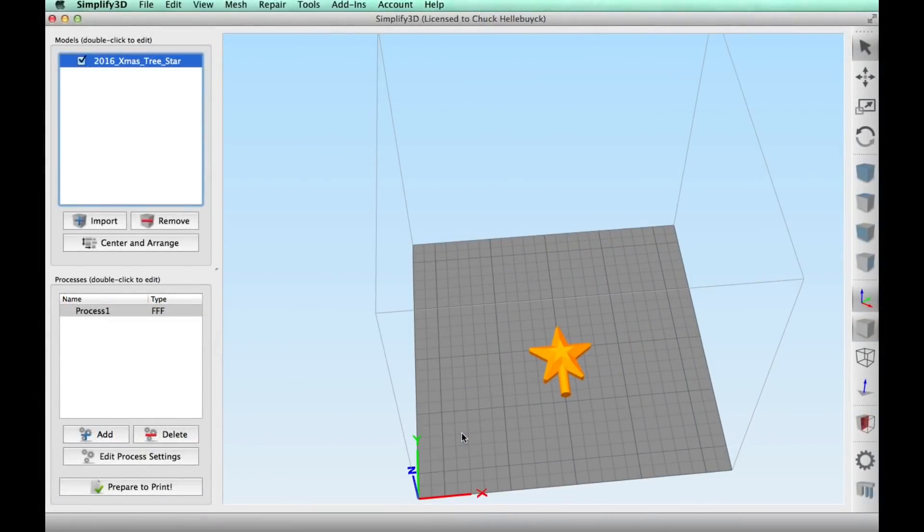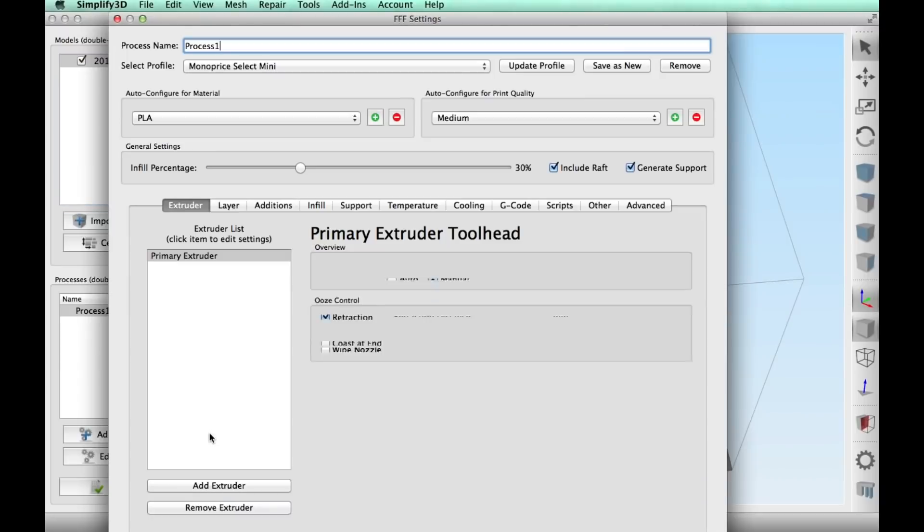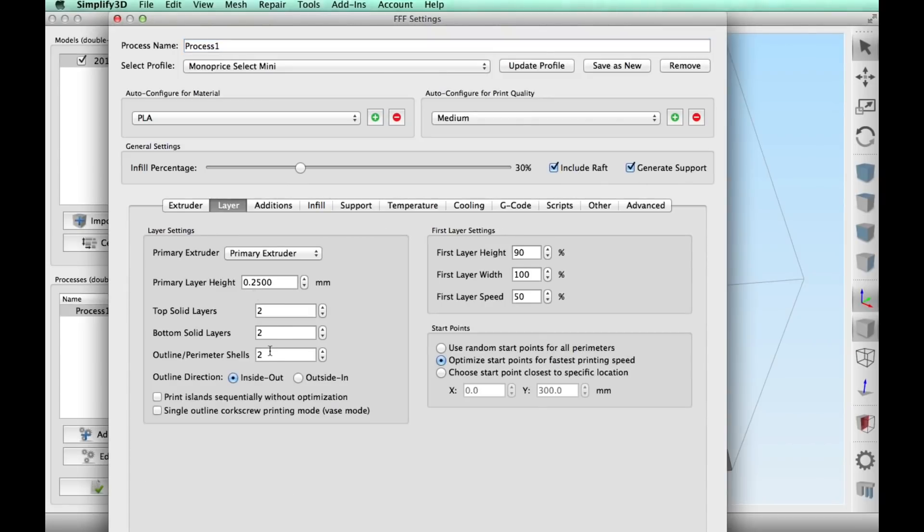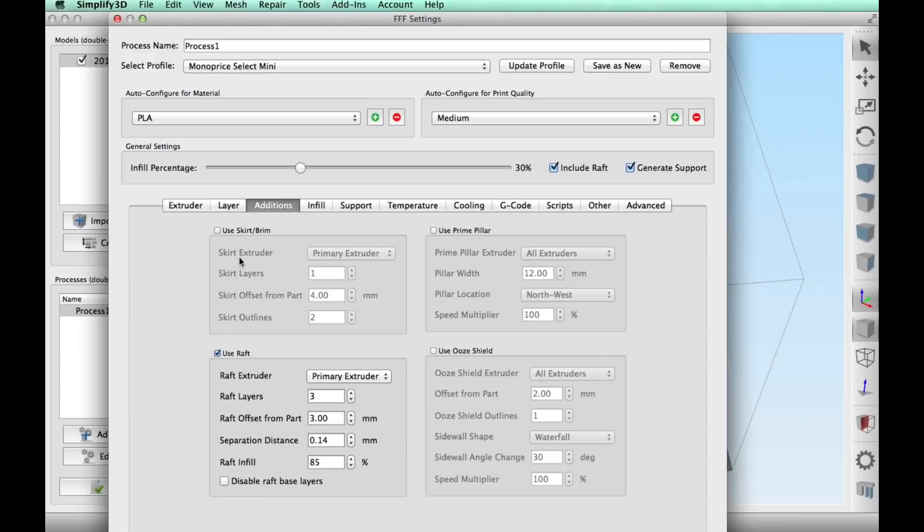There's also a star that goes with this design, so I'm going to print this on my Select Mini and I chose that profile PLA. I'm going to use 30% fill and I am going to use a raft and supports. 0.2 layer height, two top and bottom and two shells.